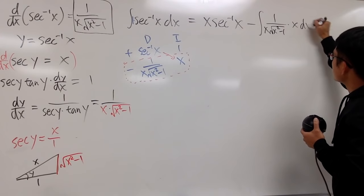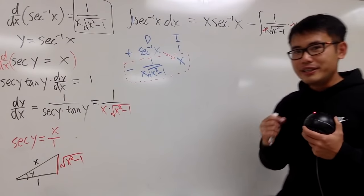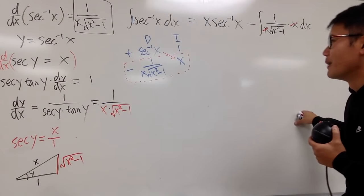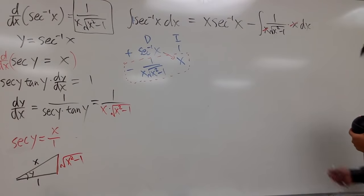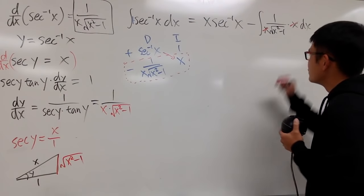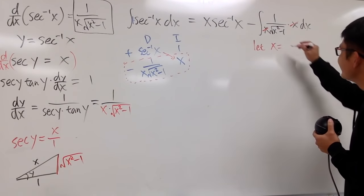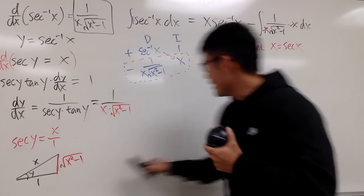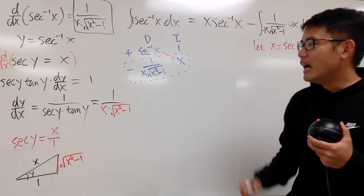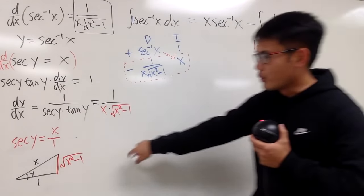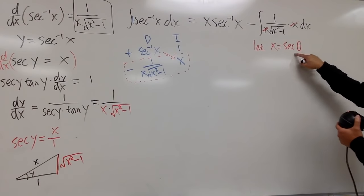The nice thing is that x and x cancel out, leaving 1 over the square root of x squared minus 1. We can actually integrate that! But how? We didn't keep going in the DI table because differentiating further gets scary. For this remaining integral, we will do a trig substitution. With something squared minus 1, let x equal to secant theta — because secant squared minus 1 gives you tangent squared. Using a triangle here is actually a better method than just memorizing the identity.